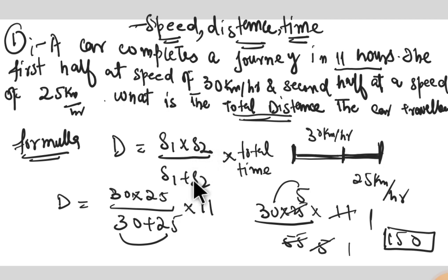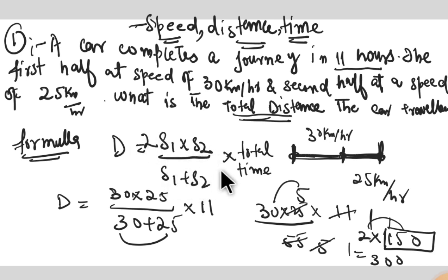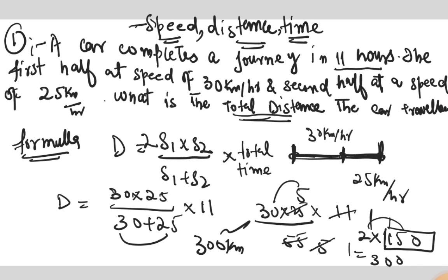Distance is equal to s1 into s2 divided by s1 plus s2 into total time. Working through: 2 into 30 into 25 divided by 30 plus 25 into 11. The total distance comes out to 330 kilometers.